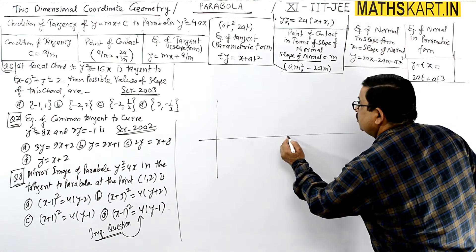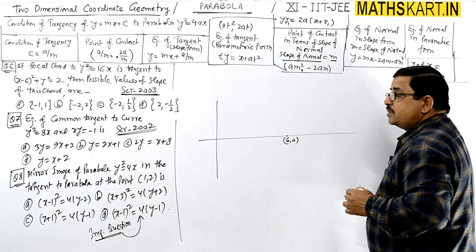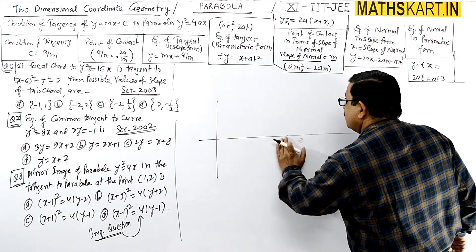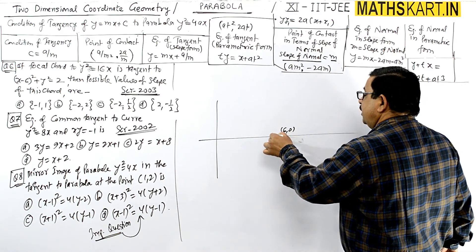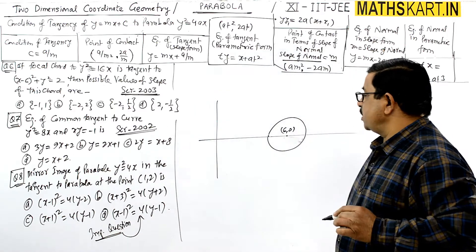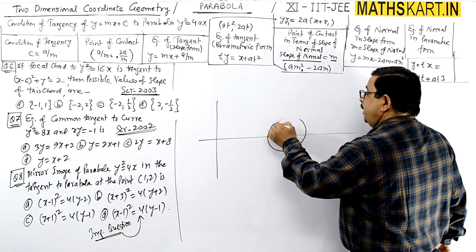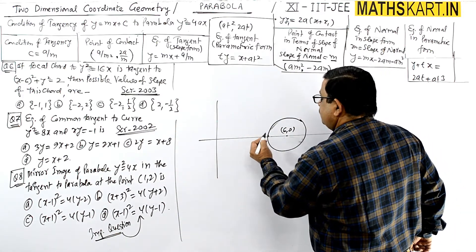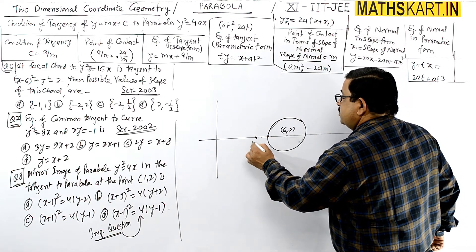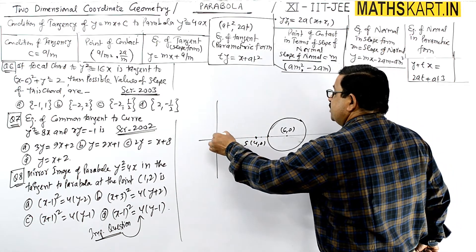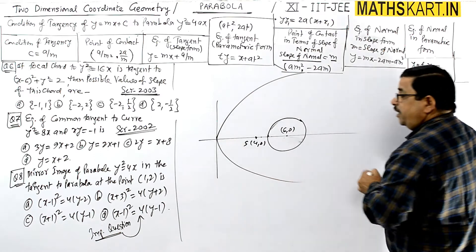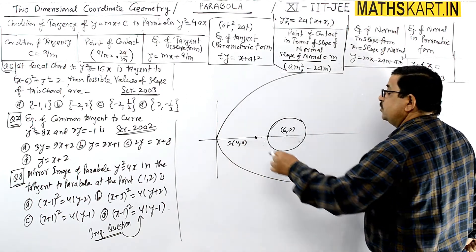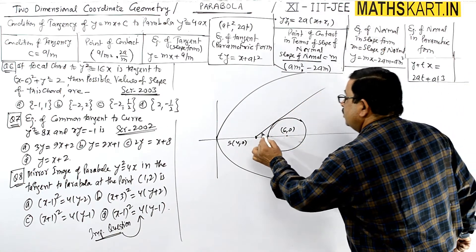This is a small circle having radius only √2. The center is at (6, 0). Let's say this is (6, 0) as the center of the circle. Also, the focus of the parabola is at (4, 0), so we can write that here — this is the (4, 0) focus.